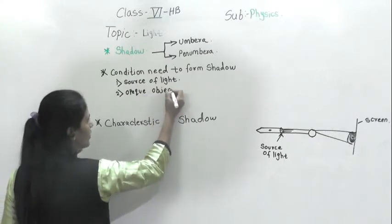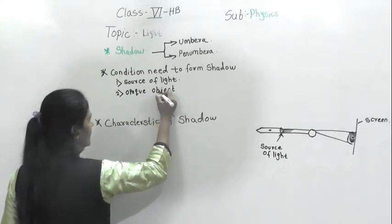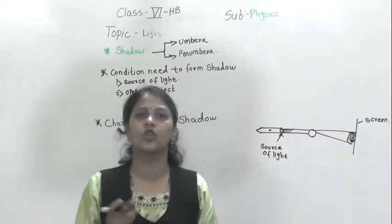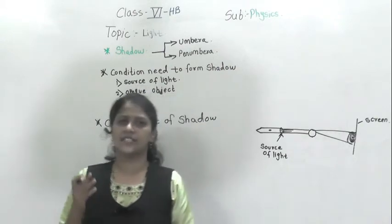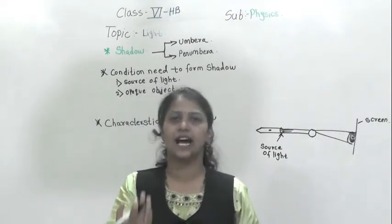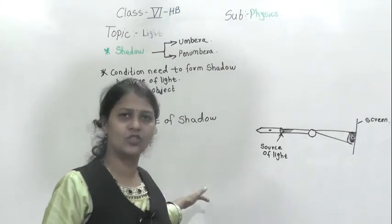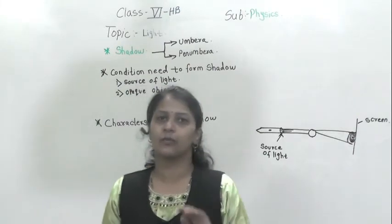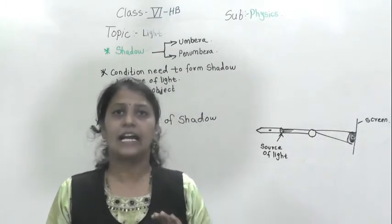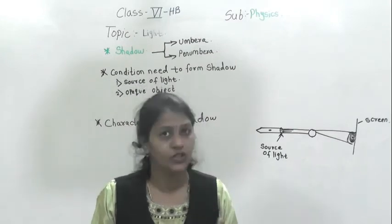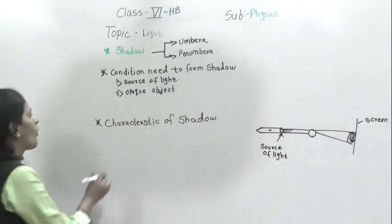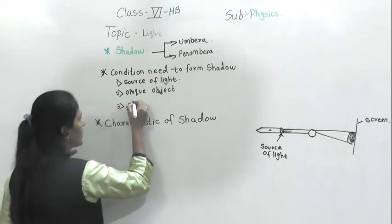The third condition is that we also need a screen, and the screen should be opaque. If there is a transparent screen — for example, if instead of a wall there is glass — then the shadow will not cast on it. So it needs an opaque screen.